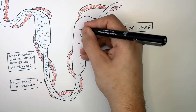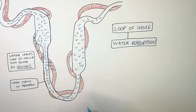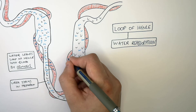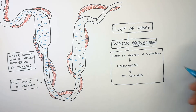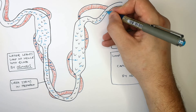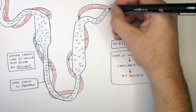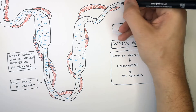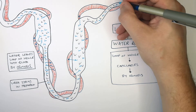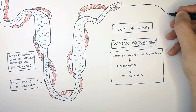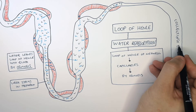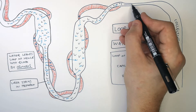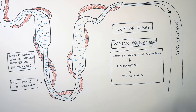Water leaves the loop of Henle into the blood by osmosis, and urea stays in the nephron. Not all the water is reabsorbed from the loop of Henle into the blood — some water will remain and enter the collecting duct along with the urea. Water and urea now enter the collecting duct from the second convoluted tubule.